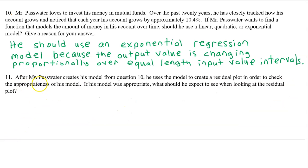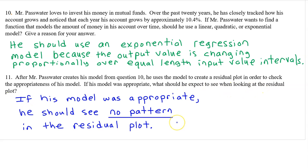Number 11. After Mr. Passwater creates his model from question 10, he uses the model to create a residual plot in order to check the appropriateness of his model. If his model was appropriate, what should we expect to see when looking at the residual plot? If his model was appropriate, he should see no pattern in the residual plot.